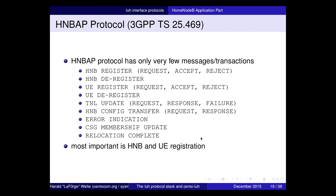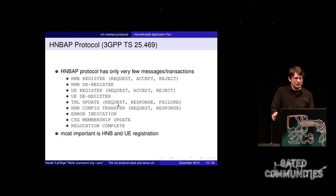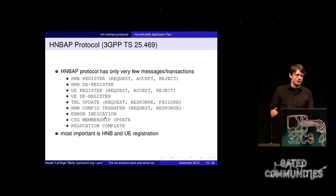The Home Node B Application Part (HNBAP) protocol handles the registration of the cell to the network and registration of user equipment. It has HNB registration with request, accept, reject, and deregistration messages — the same for mobile phones. It's really very simple conceptually: no massive state machines, very few and very limited messages.